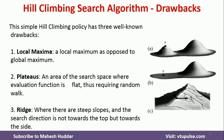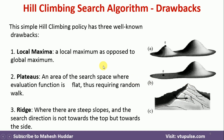Now we will see the drawbacks of the Hill Climbing search algorithm. There are mainly three drawbacks. The first one is local maxima — a state where we reach the local maximum, but this is not actually the solution. Once you reach this local maximum, if you apply any operator, we will get minimum values, so we think this is the solution but it actually is not. The second one is plateaus — an area of search where we get the same answer for all possible moves, making it very difficult to reach the goal state. The last one is the ridge, where there are steep slopes and we go towards those steep slopes rather than reaching the goal state.